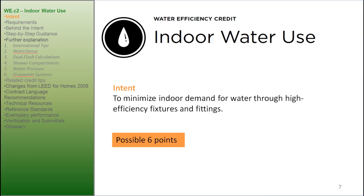Water Efficiency Credit 2: Indoor Water Use. Intent: to minimize indoor demand for water through high-efficiency fixtures and fittings. It is possible for 6 points.